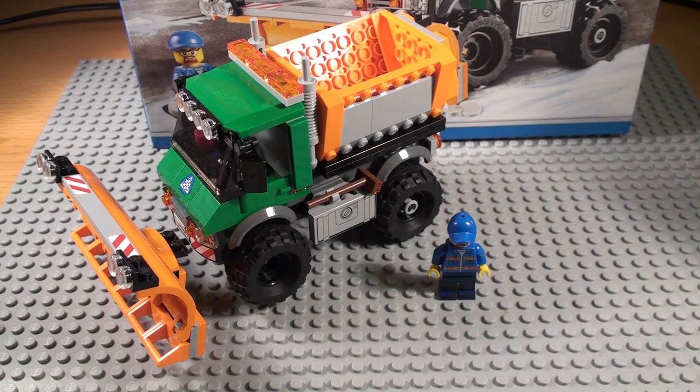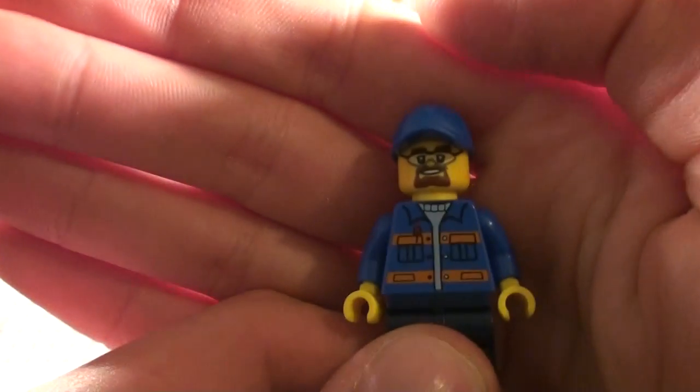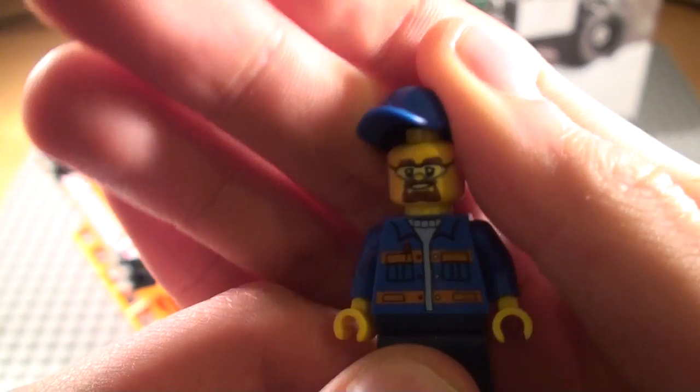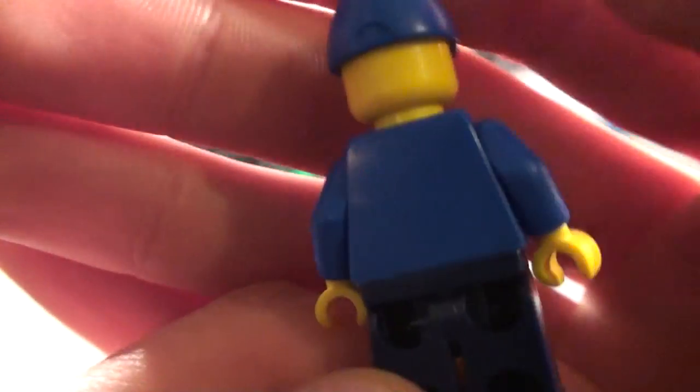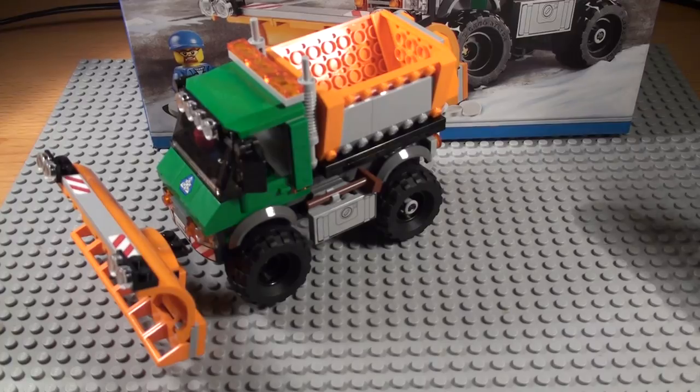It comes with one minifigure and one vehicle. I'll show you the minifigure first. It's just a regular guy. I think I've seen the face before, like a regular cap. It's only one-sided in detail. It's just a regular worker. It's fairly cool, nothing special though.